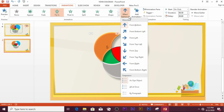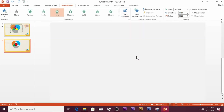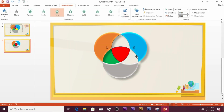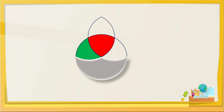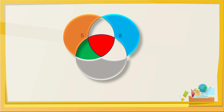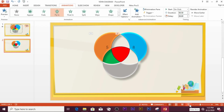For the next shape, go to Effect Options and select From Top Right. Continue applying animation presets of your choice to each segment. When you click on the animation in slide show, each segment will appear sequentially. Continue this process for the remaining shapes.